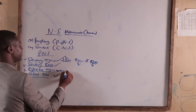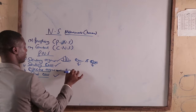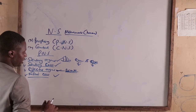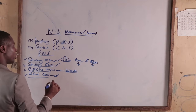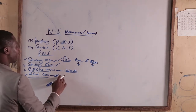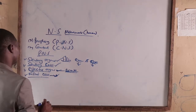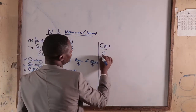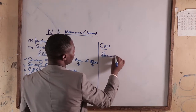The effector organs are the organs that cause response. Good examples are biceps and triceps. Motor cells are the cells that transmit information from the central nervous system to the effector organs. The central nervous system comprises of the brain and the spinal cord.